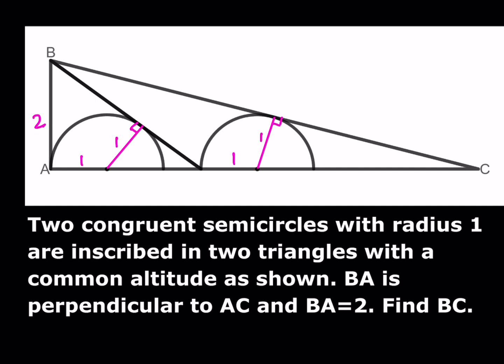What am I going to do next? I'm going to call this length here x. As you know, this is also 2 because those are two tangents drawn from outside. And let's call this length y here. From the Pythagorean theorem, the hypotenuse is going to be square root of x² + 1, and here it's going to be the square root of y² + 1. Our goal is to find BC, which contains y in it, so if we can find those lengths we can add them up.